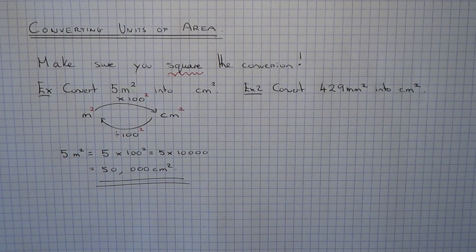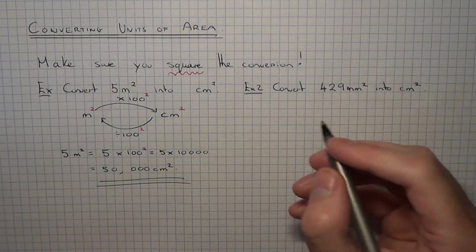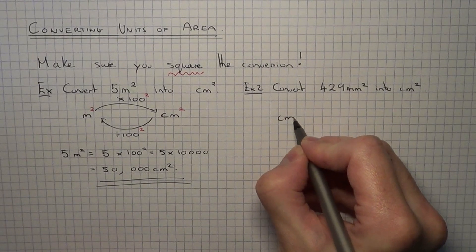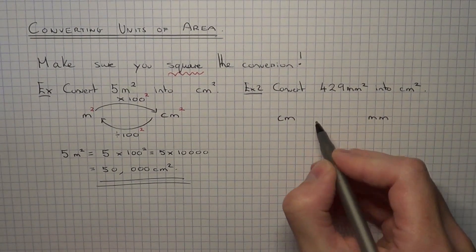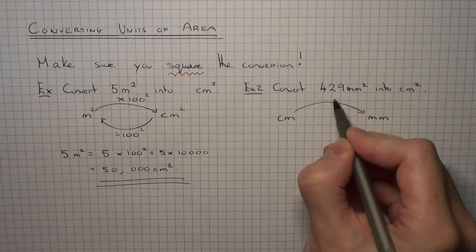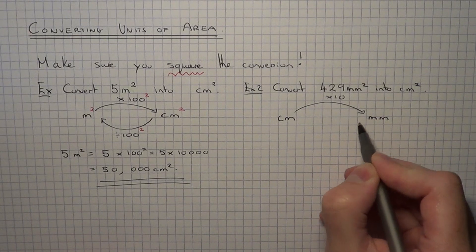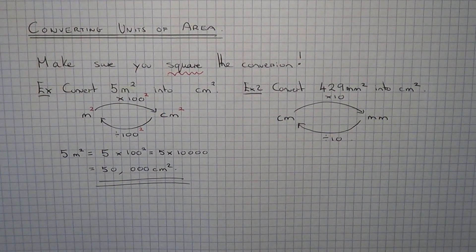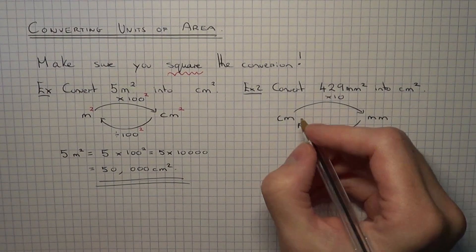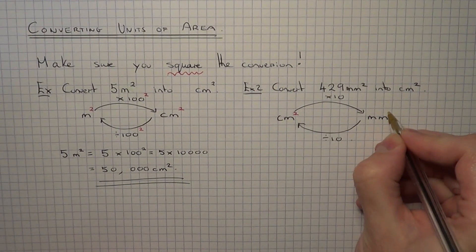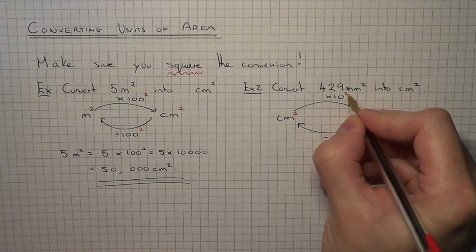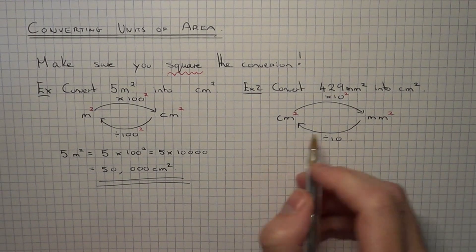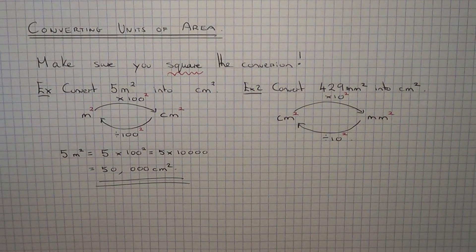So let's have a look at example 2. This time we've got to convert 429 millimetres squared into centimetres squared. This is a conversion between millimetres and centimetres. Normally to change centimetres to millimetres, you would multiply by 10, and going back from millimetres to centimetres, you would divide by 10. However, this is a squared conversion, so we need to square everything. From centimetres squared to millimetres squared, we multiply by 10 squared, and going back from millimetres squared to centimetres squared, you divide by 10 squared.